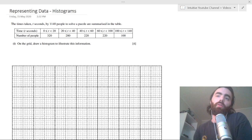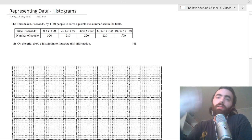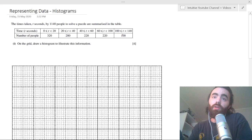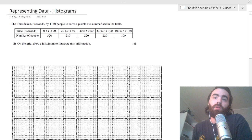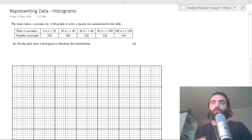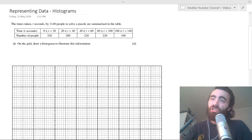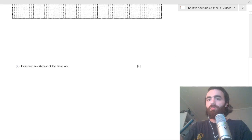So we're going to do a question, a good archetype, a good example of this, how they like to ask it. And what they like to do is they like to give you a table of frequencies. And in this case, the table is the times by a bunch of people, 1140 people, in fact, to solve a puzzle. And those times are seen here. So between 0 and 20 seconds, 320 people do it. And they want you to draw a histogram of this information. So let's do that.